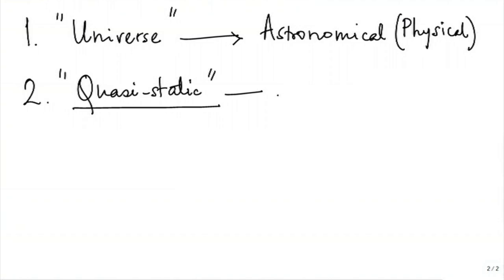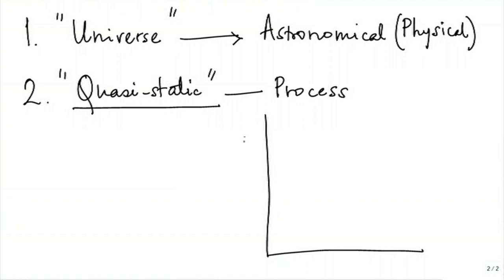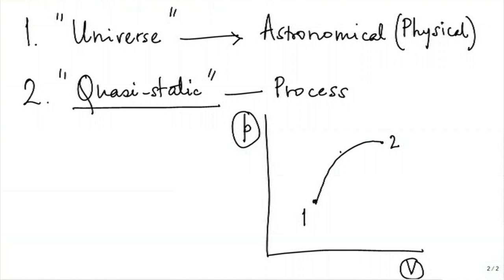Quasi-static is related to a process. If you want p, v, or anything else — suppose this is your initial state and this is your final state, the process will take you from state 1 to state 2. But if during the process we are able to define all intermediate states properly and get a continuous path, then we will call that a quasi-static process.